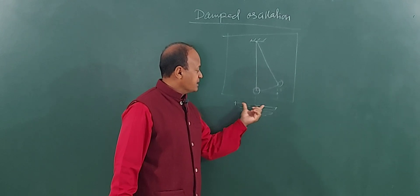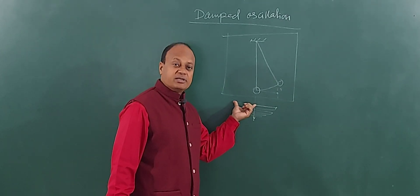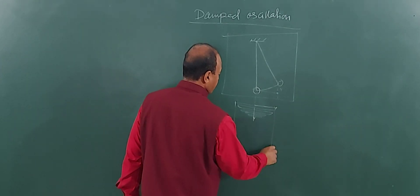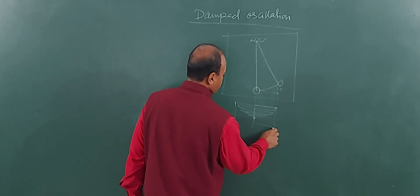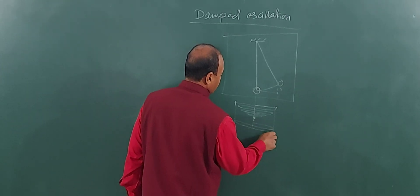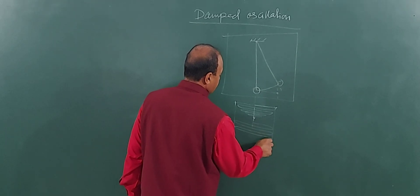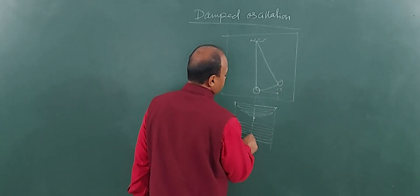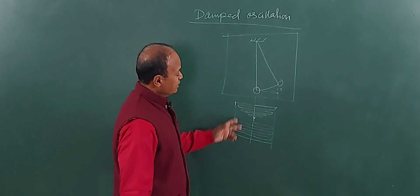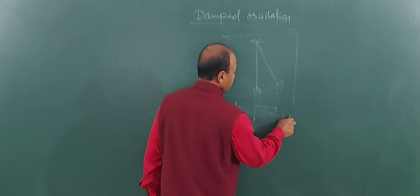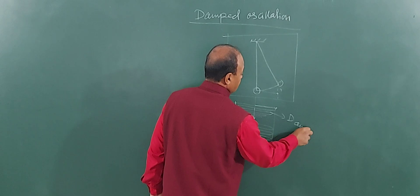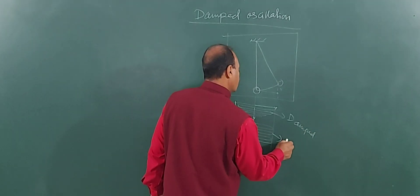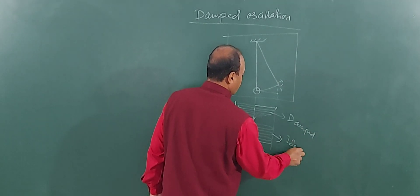The amplitude will always be the same — whatever is the displacement on this side, same will be the displacement on the other side. If I draw it, the wave goes here, comes back, goes, comes back — the amplitude is not decreasing. It remains the same. So these vibrations we call damped, and these vibrations we call ideal or undamped.